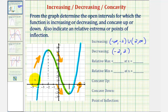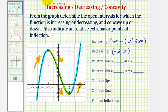Notice where the function changes from increasing to decreasing, we have a high point and therefore a relative maximum. And where the function changes from decreasing to increasing, we have a low point or relative minimum. The relative maximum value is the y value and the location is the x value. So we have a relative maximum of approximately eight point three at x equals negative two. Sometimes you'll see the relative maximums given as ordered pairs as well. And then we have a relative minimum of approximately negative two point three at x equals positive two.